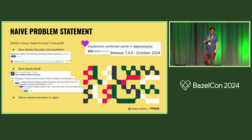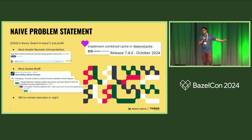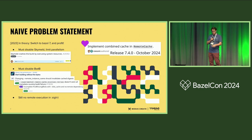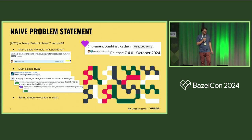We started with a very naive idea: switch to Bazel 7, get SkyMeld, get build-without-the-bytes, and get remote execution right after that. It would be easy, right? Well, we hit tons of problems. We had to disable SkyMeld because we were running Nix actions in parallel with Bazel actions and they had no knowledge of each other — they would oversubscribe system resources, and one of them would crash, usually Bazel.